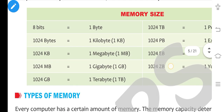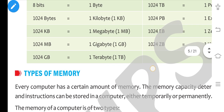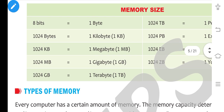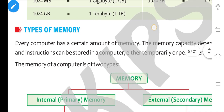Zero and one are called binary digits. Many memory sizes are defined: 8 bits equals 1 byte, 1024 bytes equals 1 kilobyte, 1024 KB equals 1 megabyte, 1024 MB equals 1 gigabyte, and 1024 GB equals 1 terabyte. This is how we measure memory size.